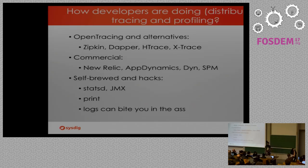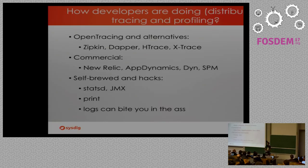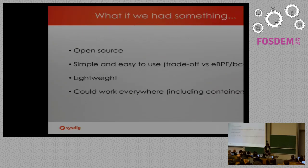There are quite a few options, some of them open source, big ones compatible with OpenTracing, which is a standard API. A few commercial ones — probably you know New Relic, AppDynamics. And obviously people, because they didn't have heavy and very specific needs and just had to monitor something, started to do all sorts of hacks, like using statsd, JMX, prints — who hasn't done prints to see what their code is doing — or misusing logs for that.